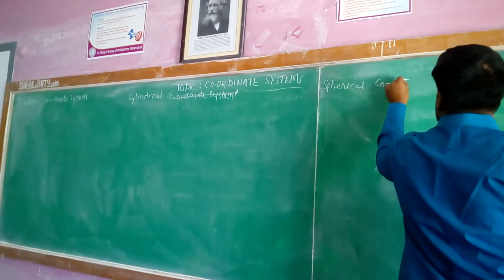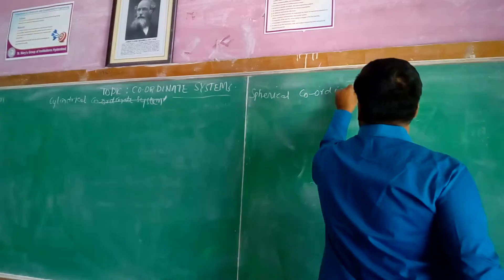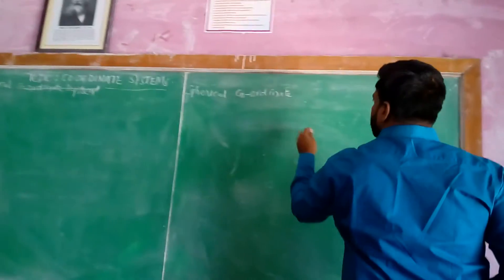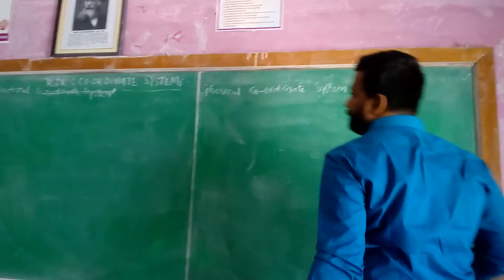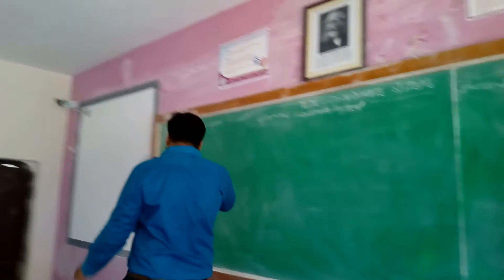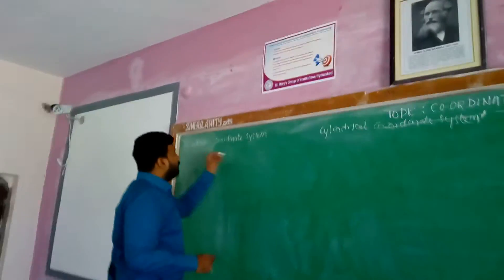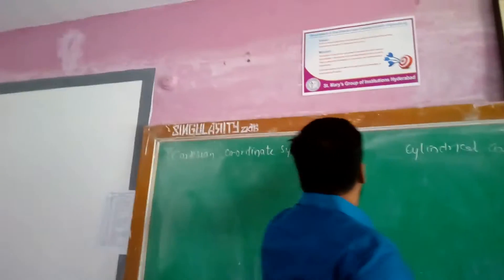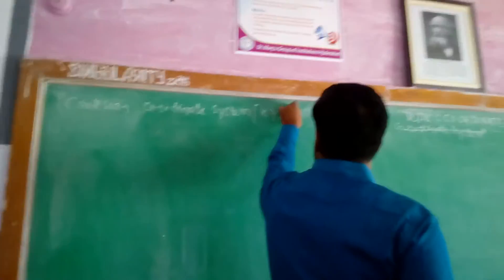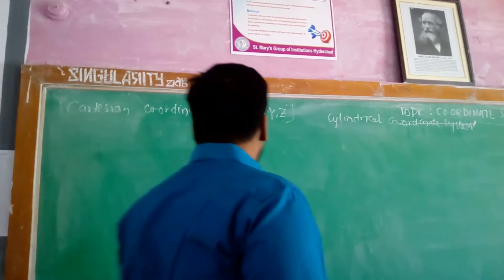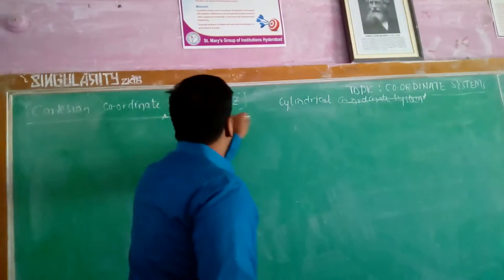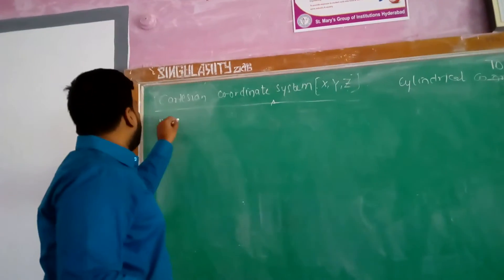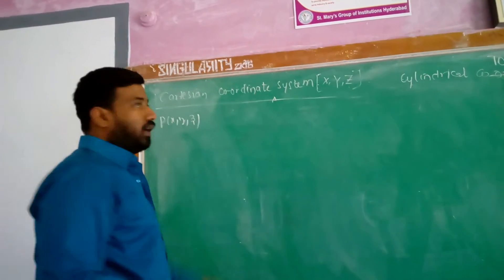Today we will discuss the coordinates of this coordinate system and their range. The coordinates are x, y, and z. It means any point in the Cartesian coordinate system can be given by x, y, z.